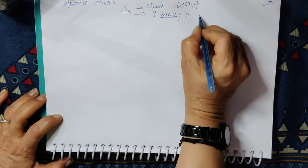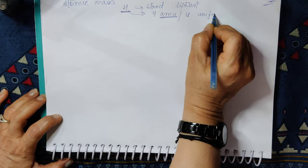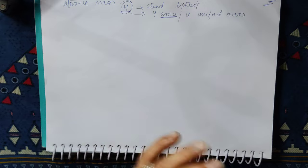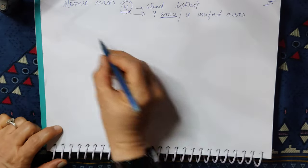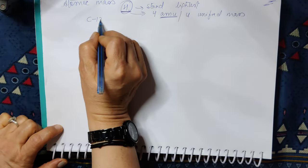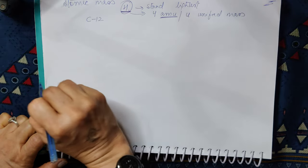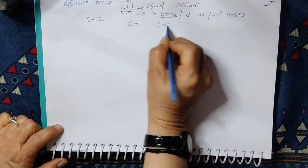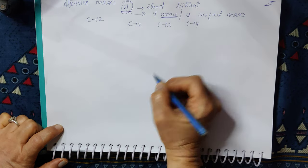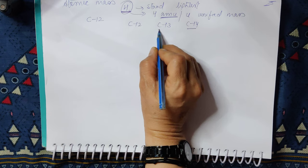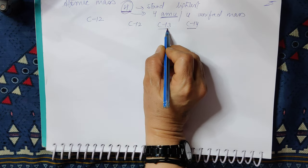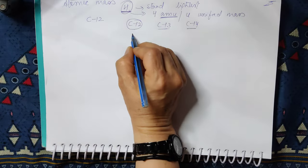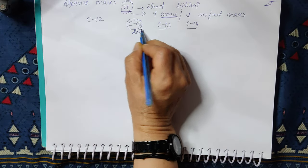Today this is replaced. Now we write U, which stands for unified mass. But with hydrogen, there were no more satisfactory answers. After that, the most abundant carbon isotope is carbon-12. The most abundant isotope is carbon-12, and the most important thing is that it is very stable.